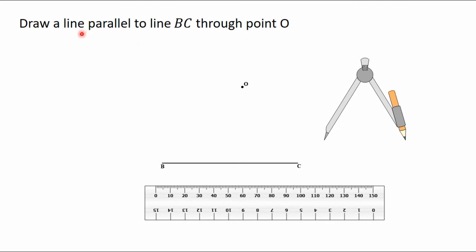In order to construct a line parallel to BC through the point O, the first thing you have to do is to construct a perpendicular line to the line BC through the point O. We have already learned how to construct a line perpendicular to another line through a point outside the line. So here we are going to construct a perpendicular line to the line BC through the point O.